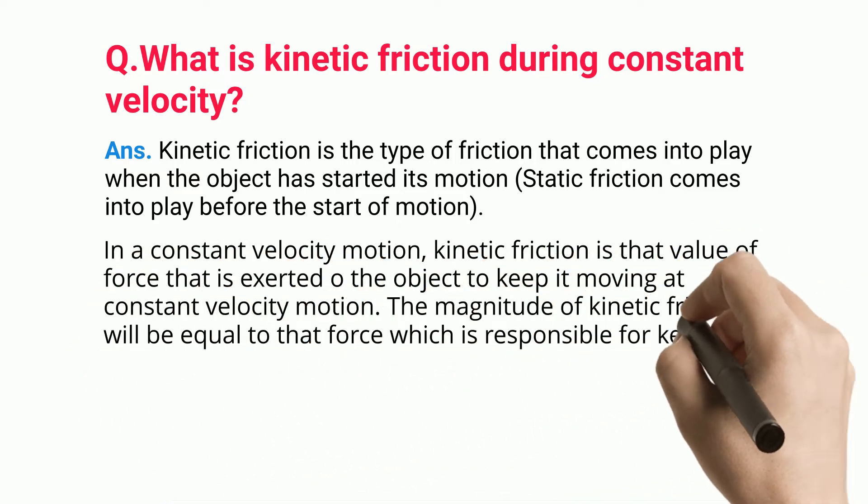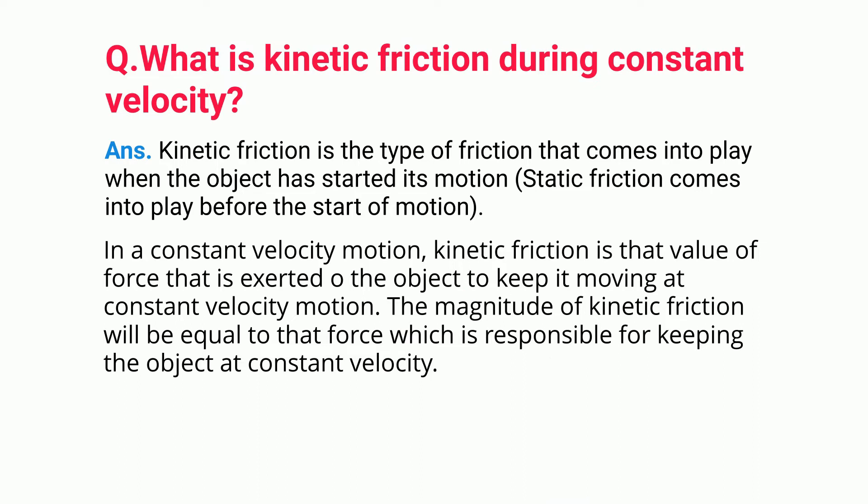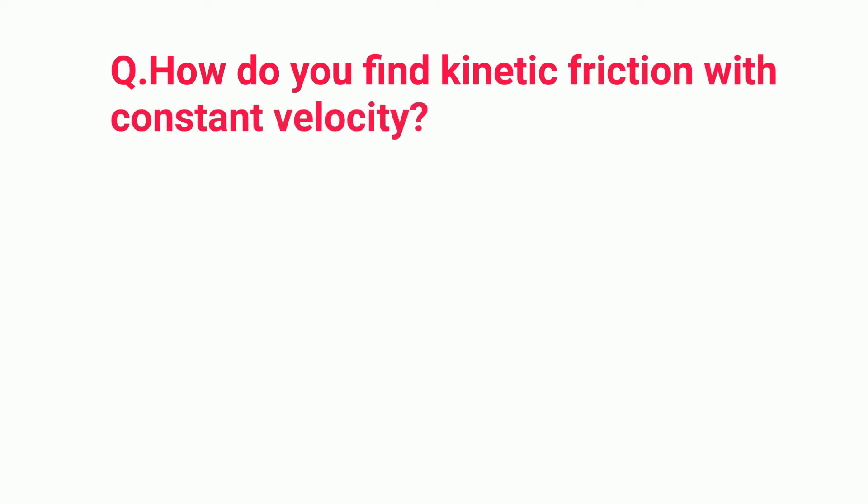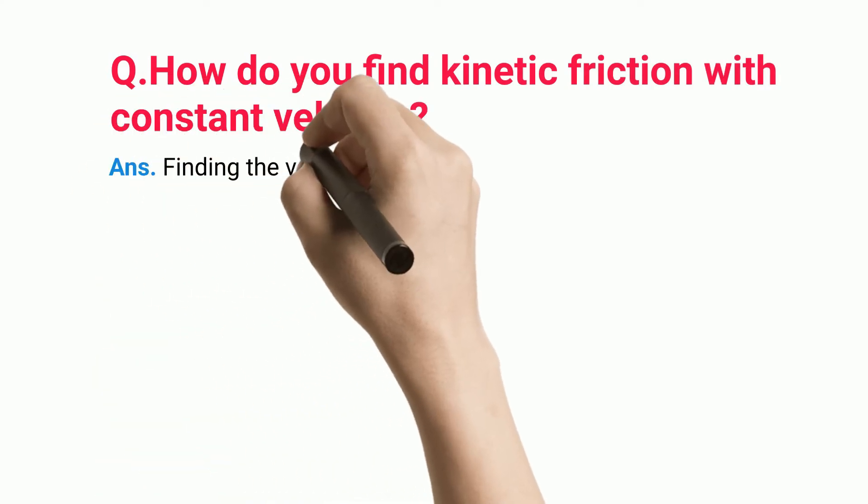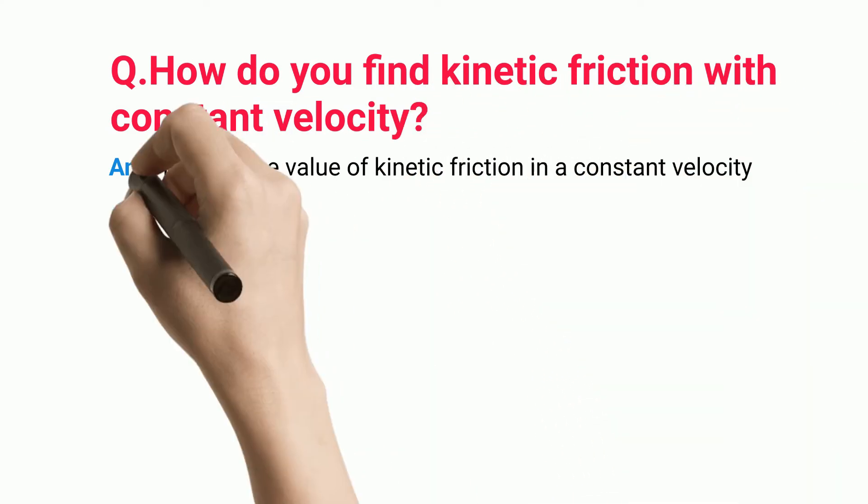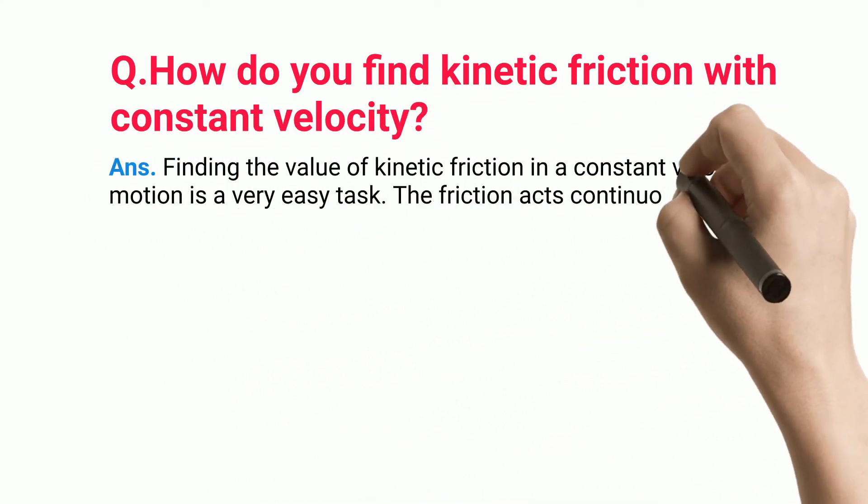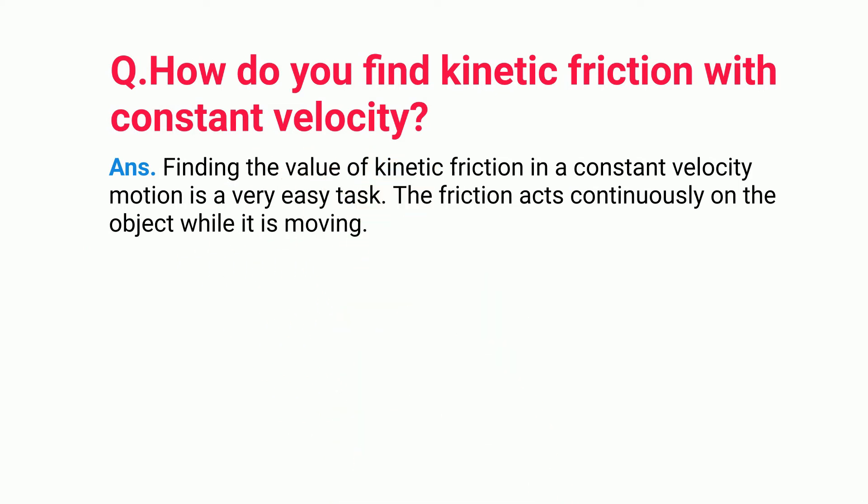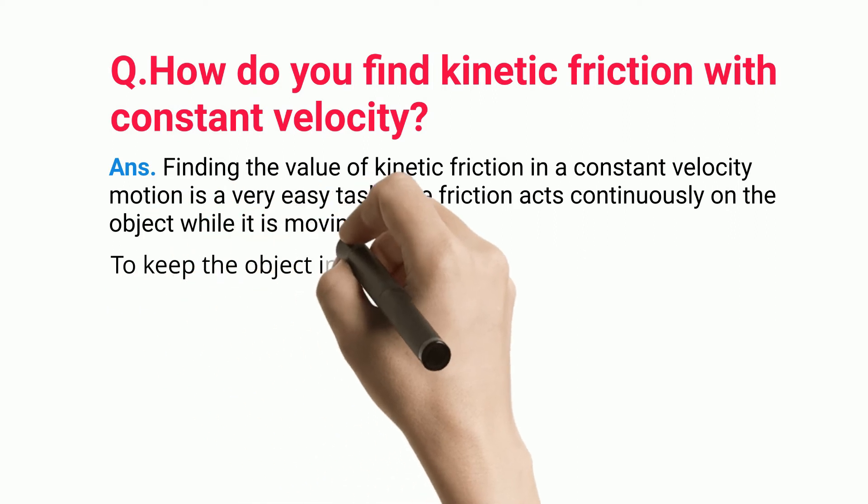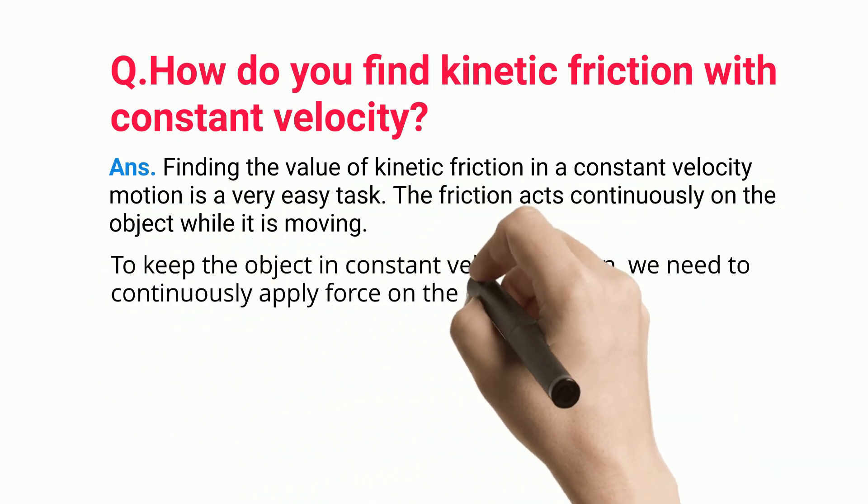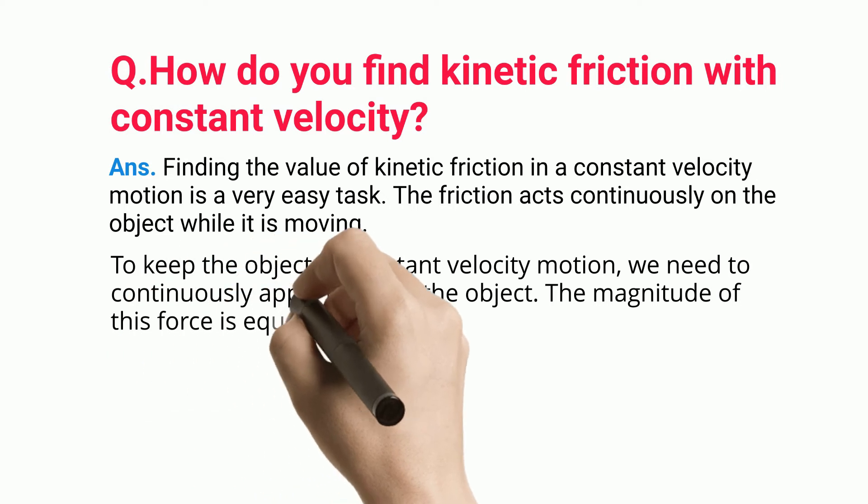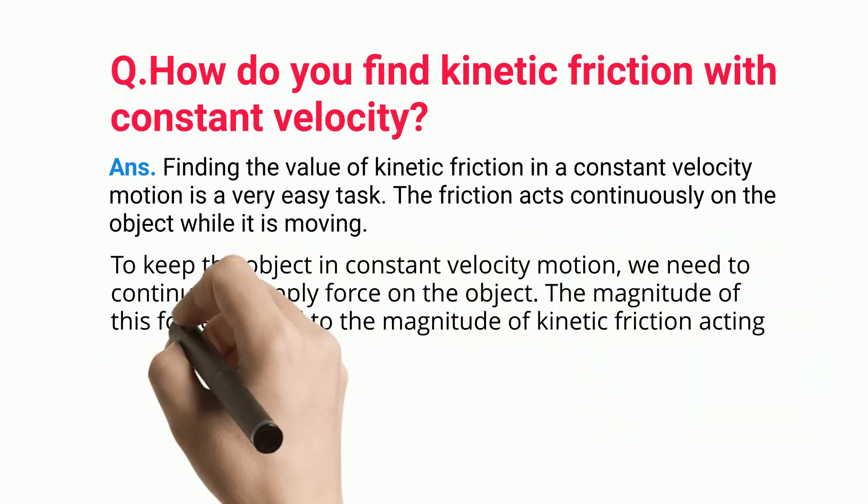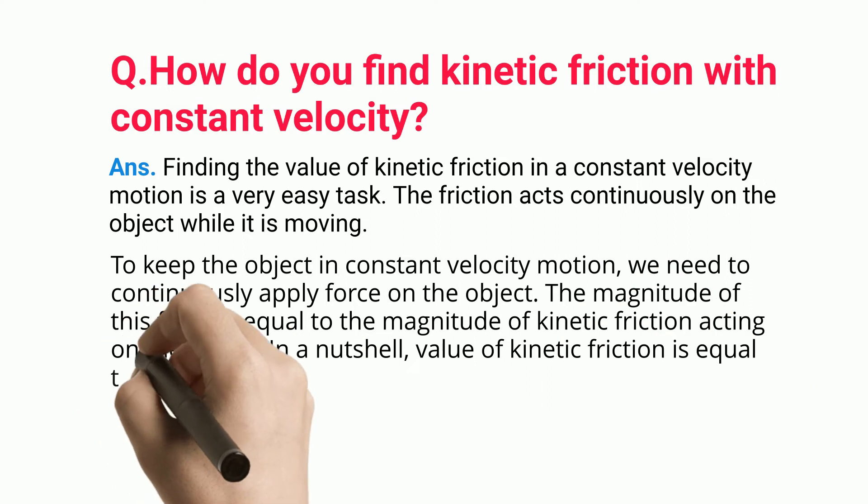The magnitude of kinetic friction will be equal to that force which is responsible for keeping the object at constant velocity. How do you find kinetic friction with constant velocity? Finding the value of kinetic friction in constant velocity motion is very easy. Friction acts continuously on the object while it is moving. To keep the object in constant velocity motion, we need to continuously apply force on the object.